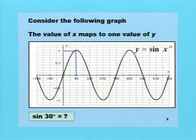Consider the following graph. The value of x maps to one value of y. That is, since that is happening, then y equals sine x is a function. Using a vertical line test, if we draw a vertical line anywhere along that graph, and if the vertical line cuts the graph only at one point, only then we can conclude that the graph represents a function. For example, if there is a circle and you draw a vertical line down, it will cut the circle at two points. Since it is cutting the circle at two points, then the equation of a circle is not a function.